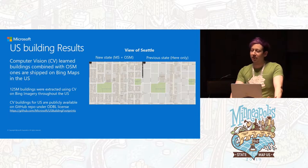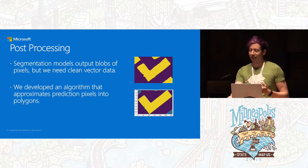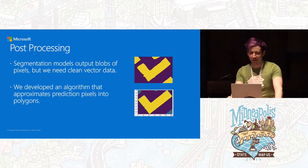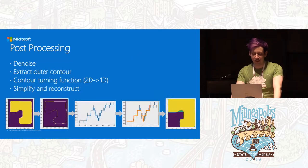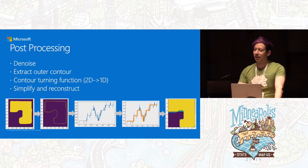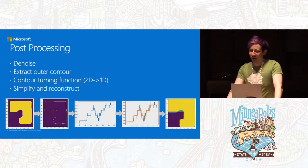There's a whole bunch of post-processing that goes on top of that to make sure we have good quality. Semantic segmentation gives us nice blobs, not the kind of stuff we want on a map. So we developed a post-processing pipeline that looks at all those edges, creates a contour function, and ultimately produces nice square buildings. There's still an outstanding bug about water towers — apparently all the water towers are square now.